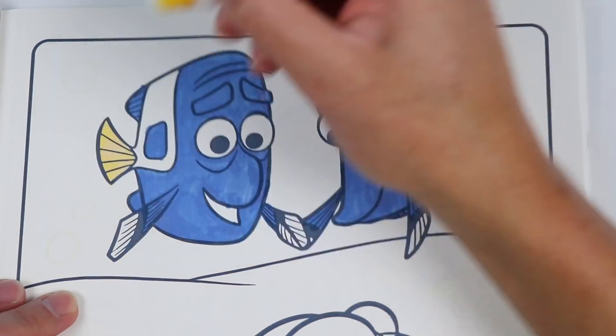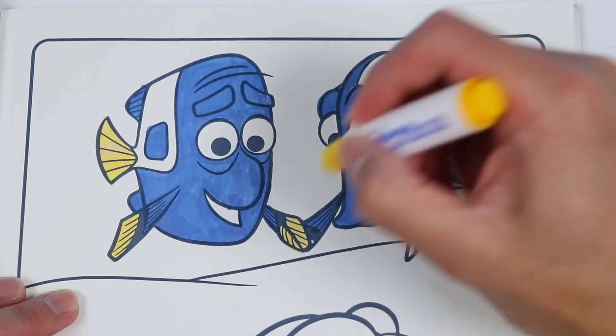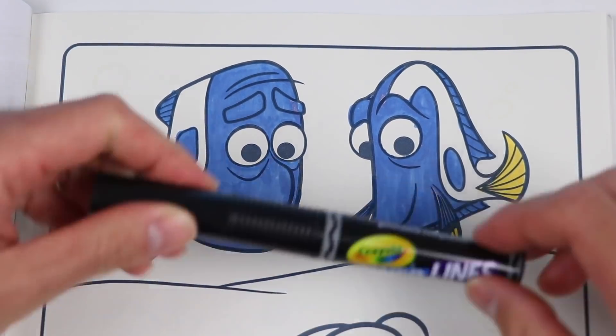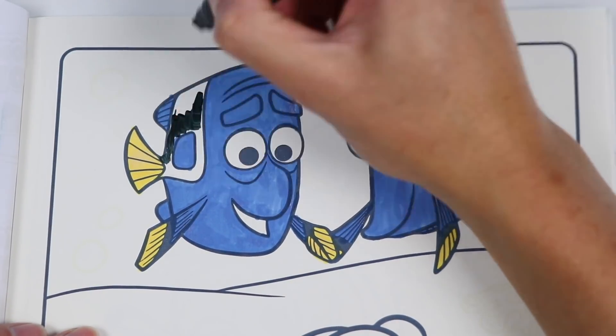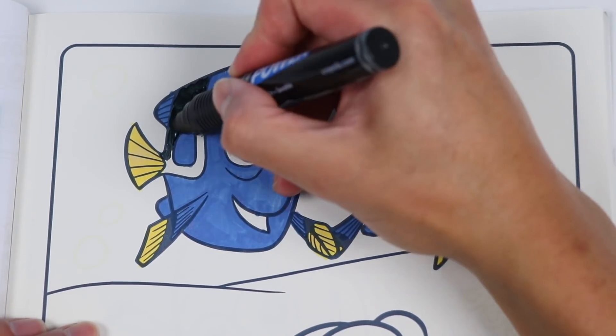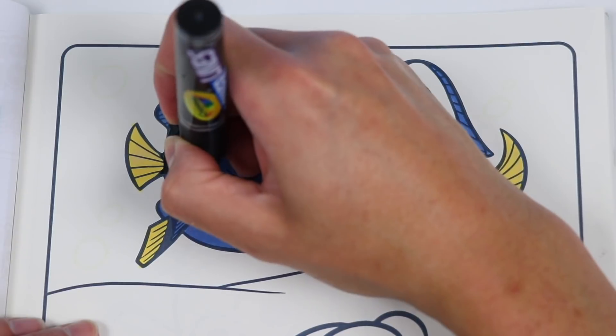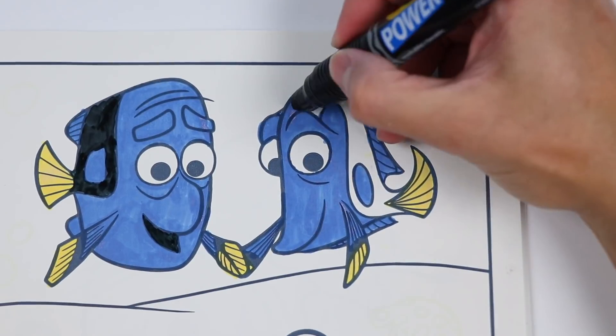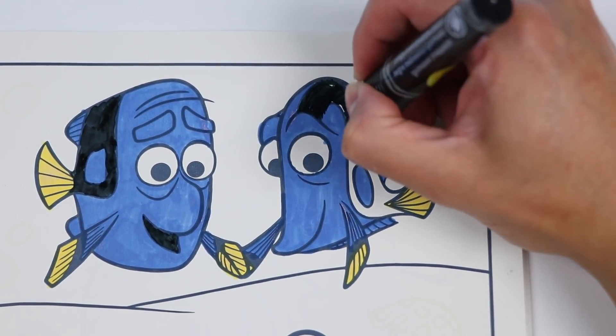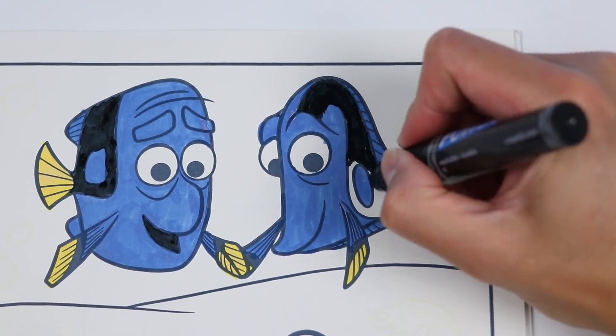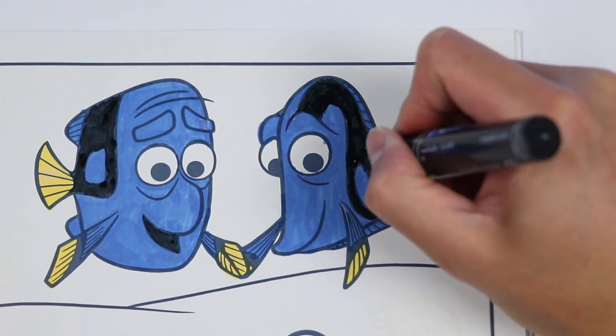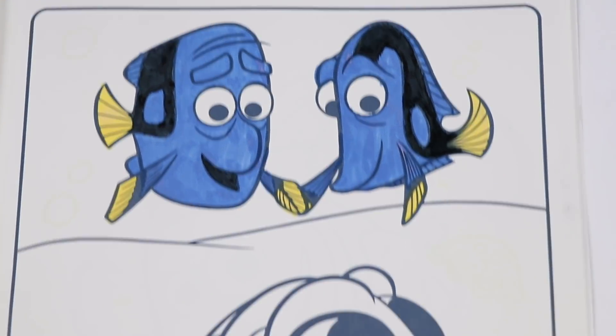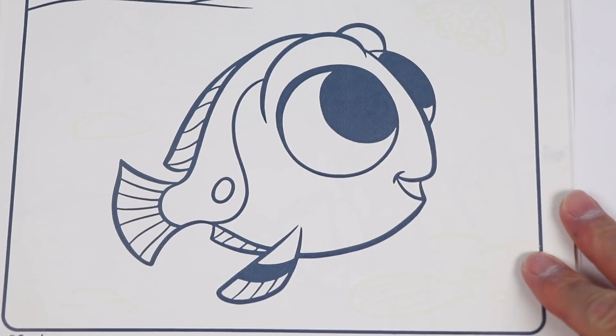Now let's use yellow. Now let's use black. Awesome, check out Dora's mom and dad. Now let's work on Dora. Use blue again.